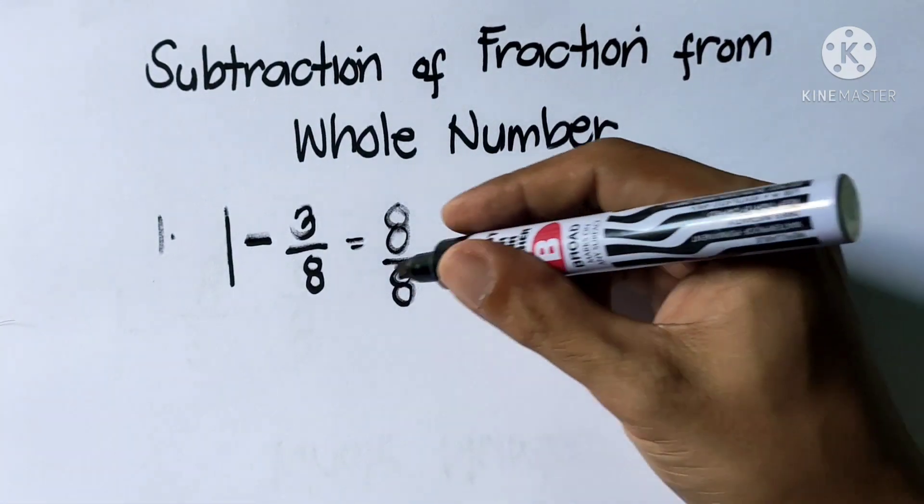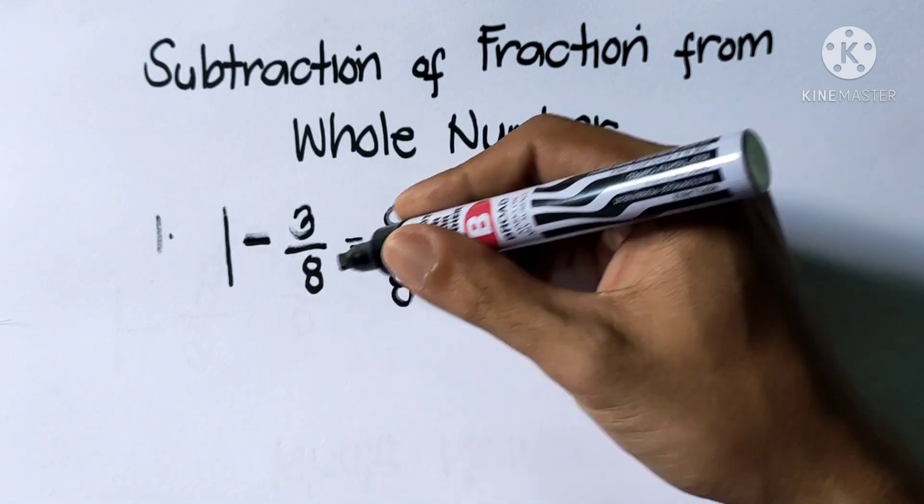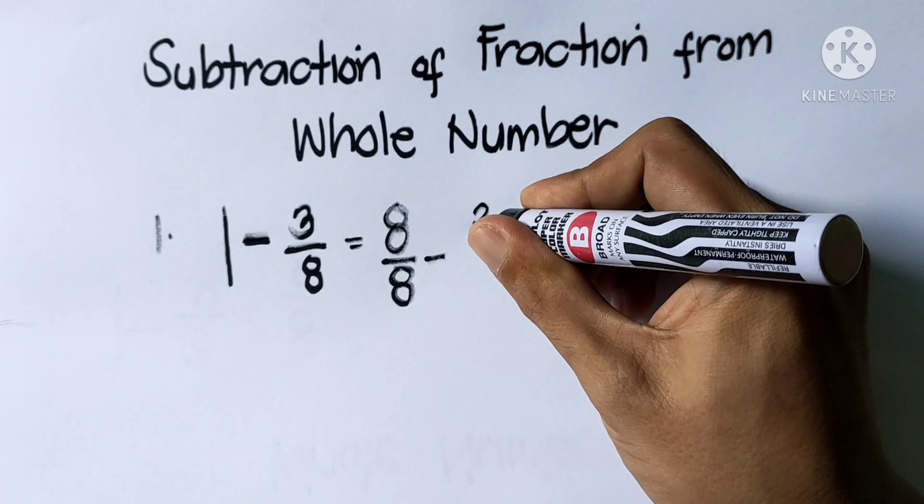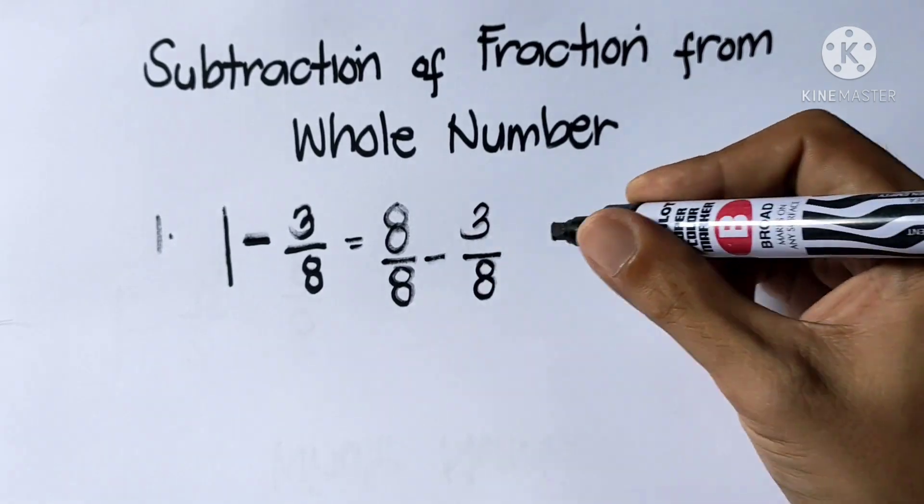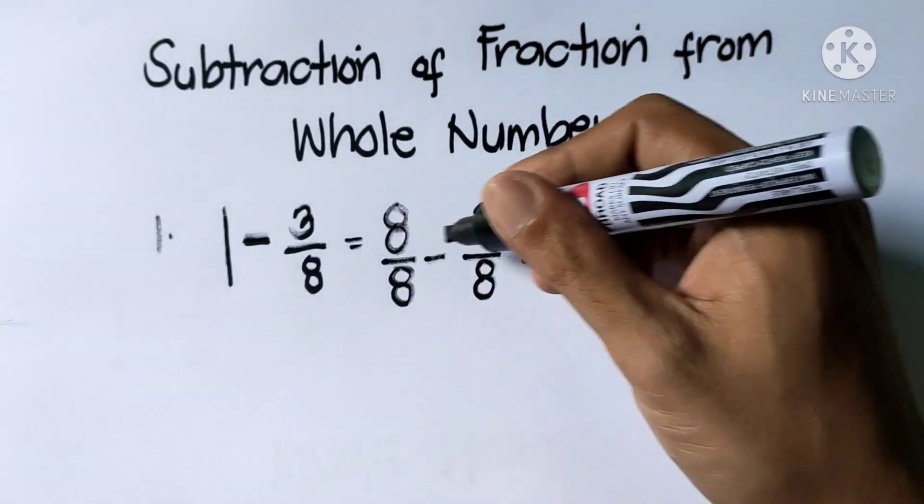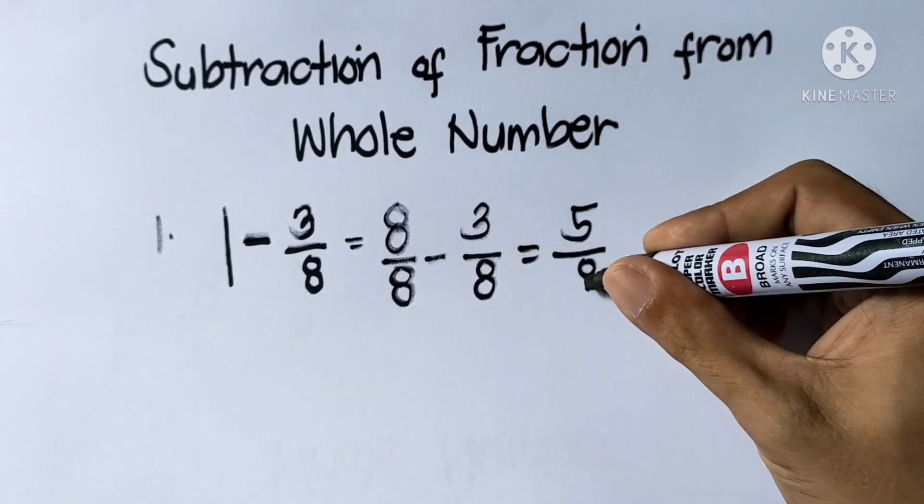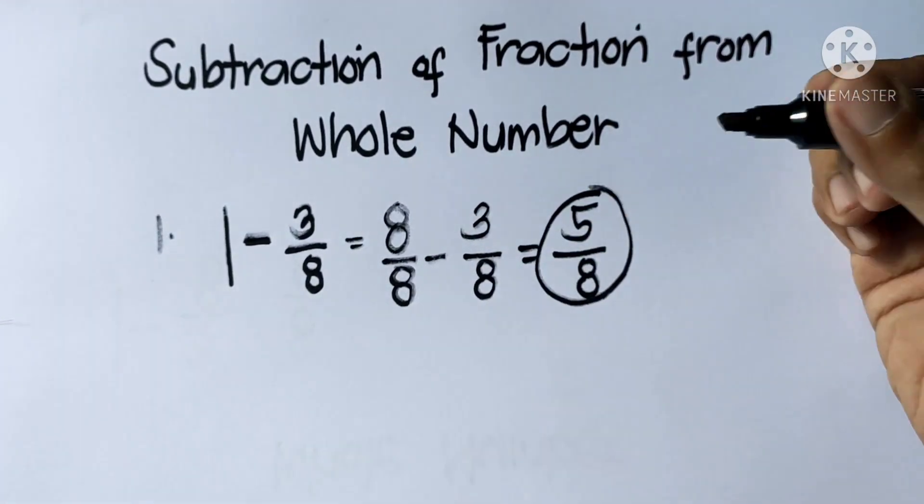Why 8 over 8? Because the given denominator is 8, so we copy it to make it similar fractions. Then go to subtraction. 8 minus 3 is 5. Copy the denominator which is 8. So the answer is 5 over 8.